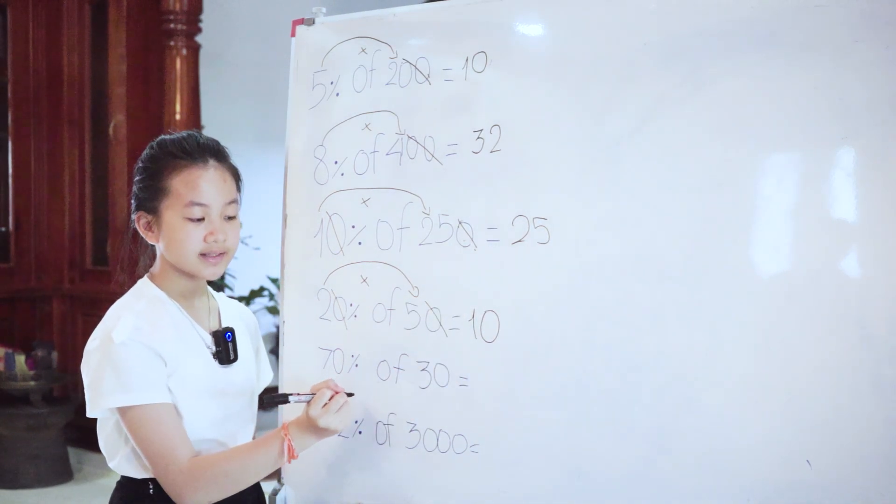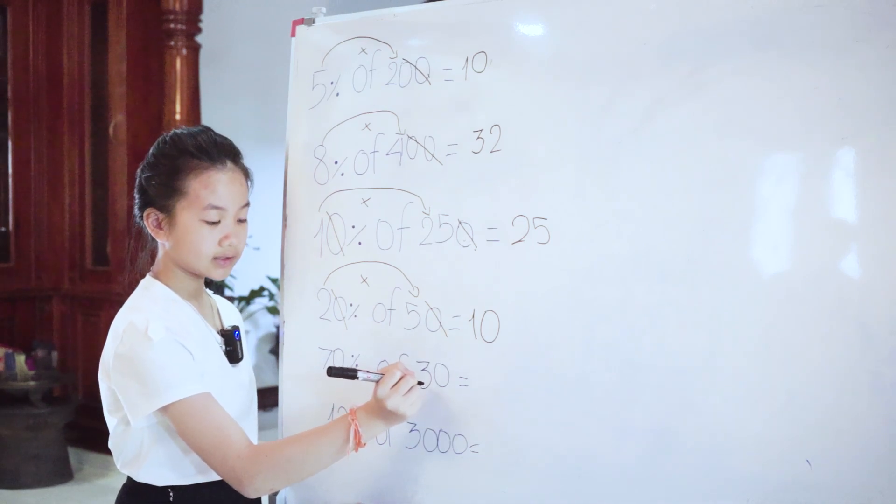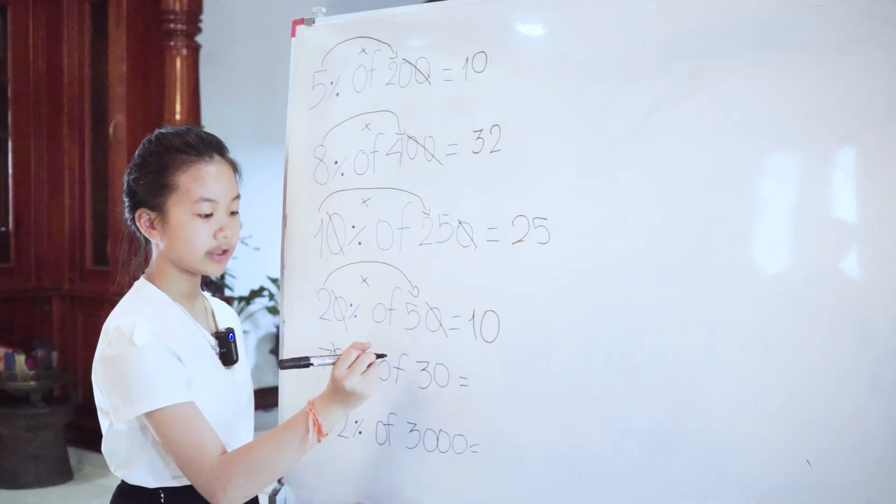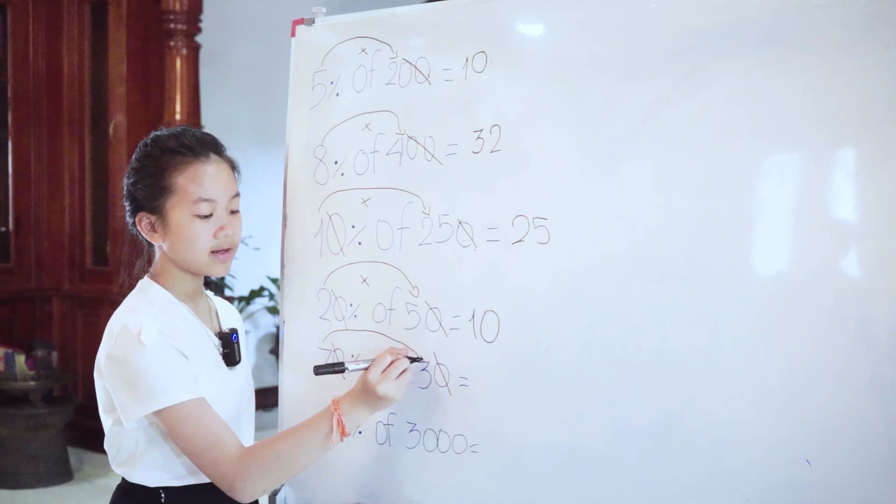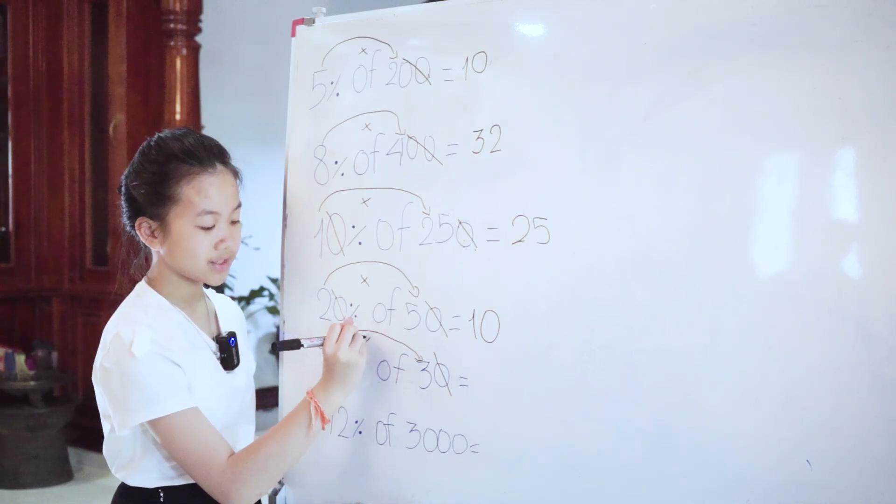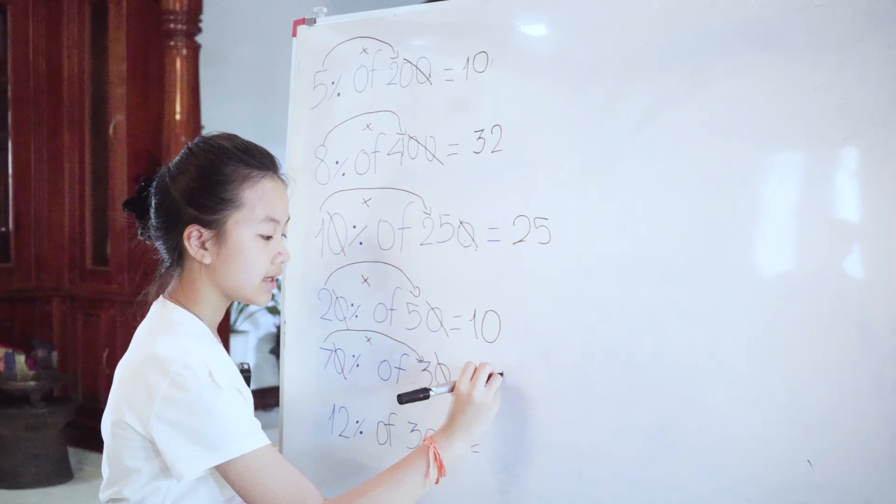70% of 30, cut zero here, cut zero here. Then take 7 and 3 and multiply each other, equals 21.